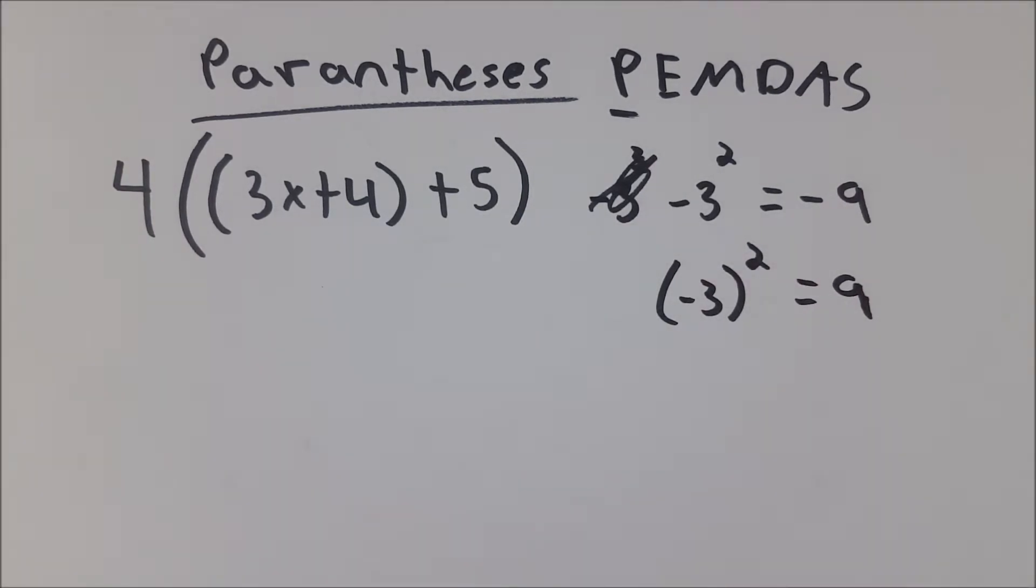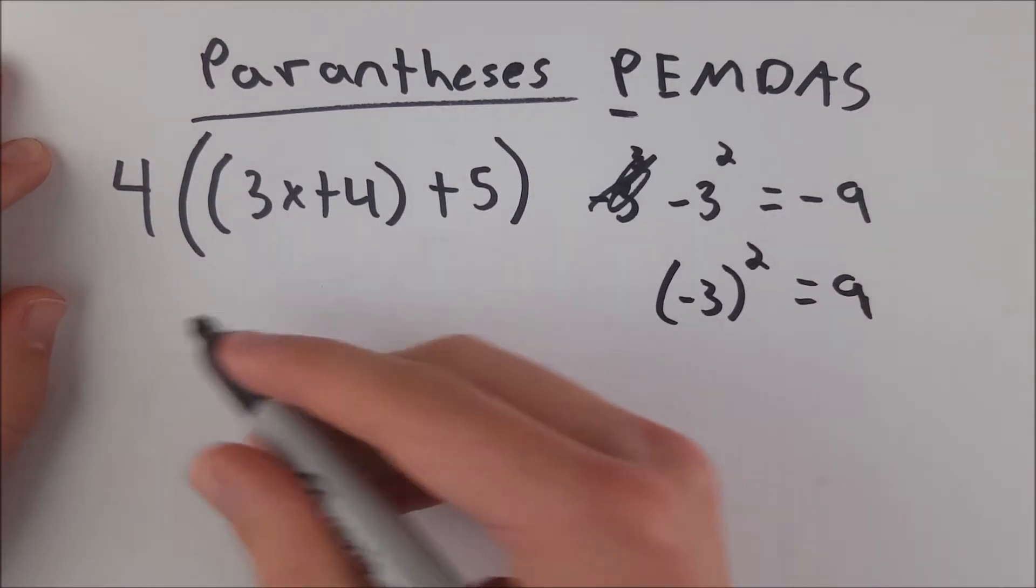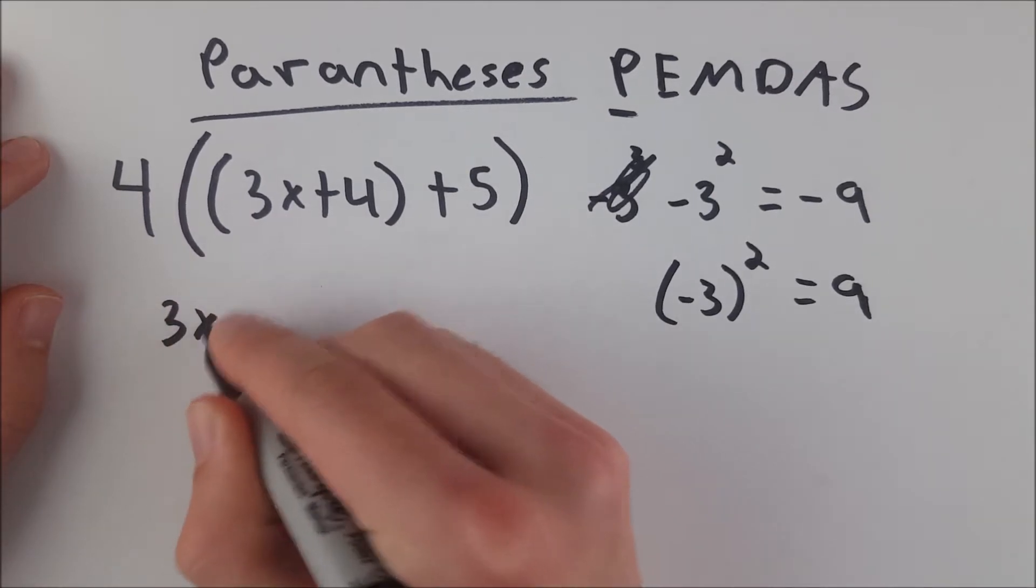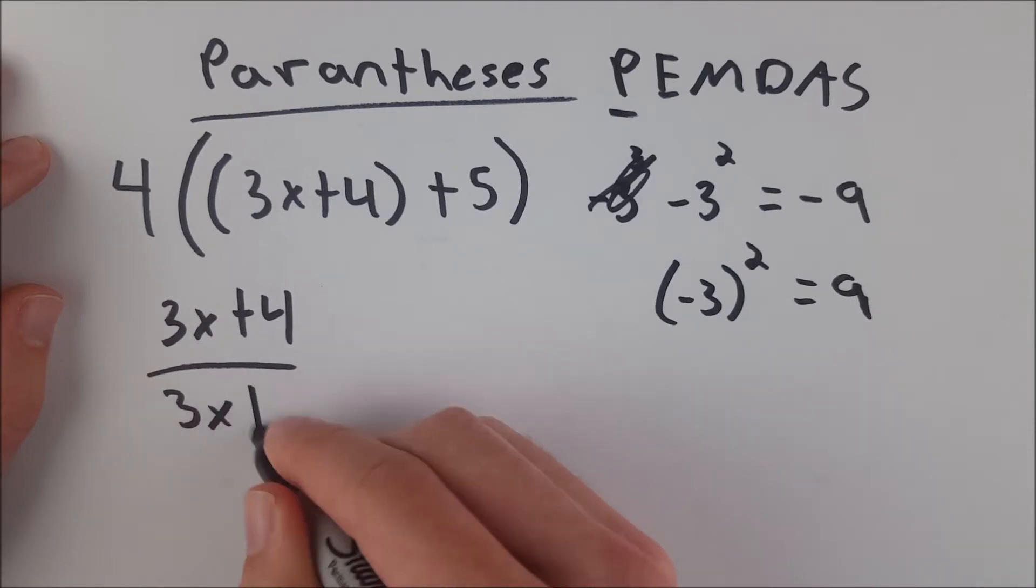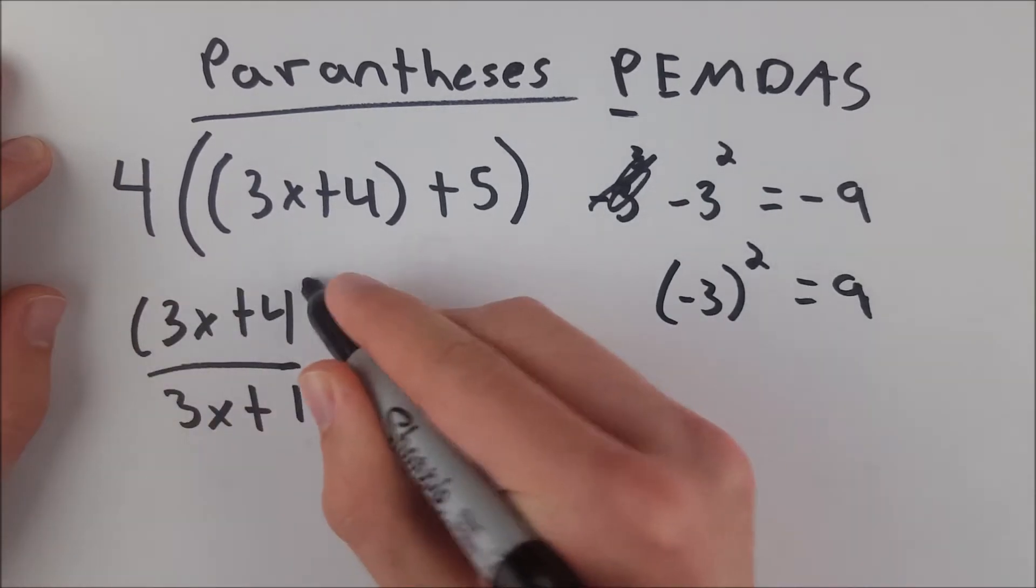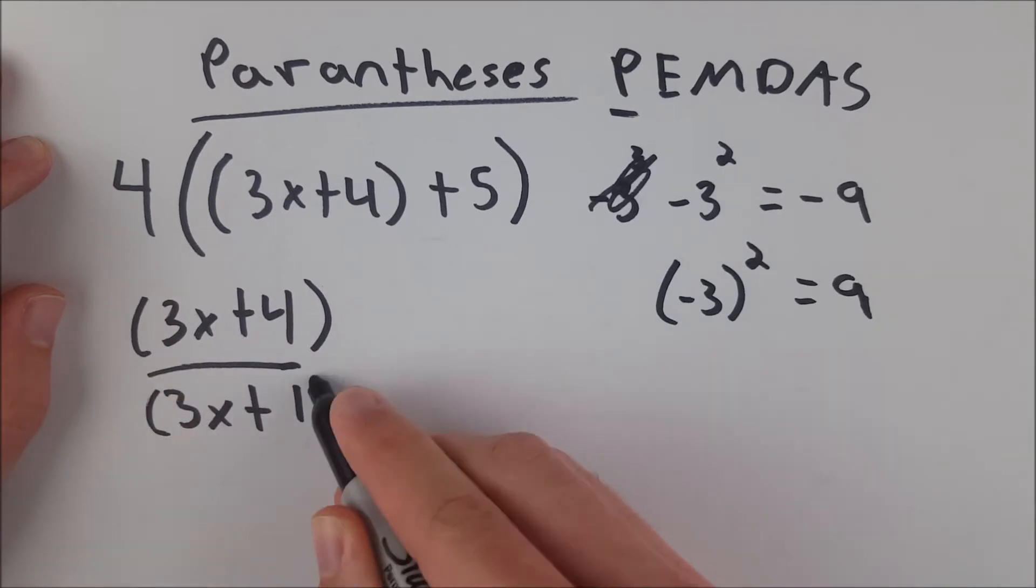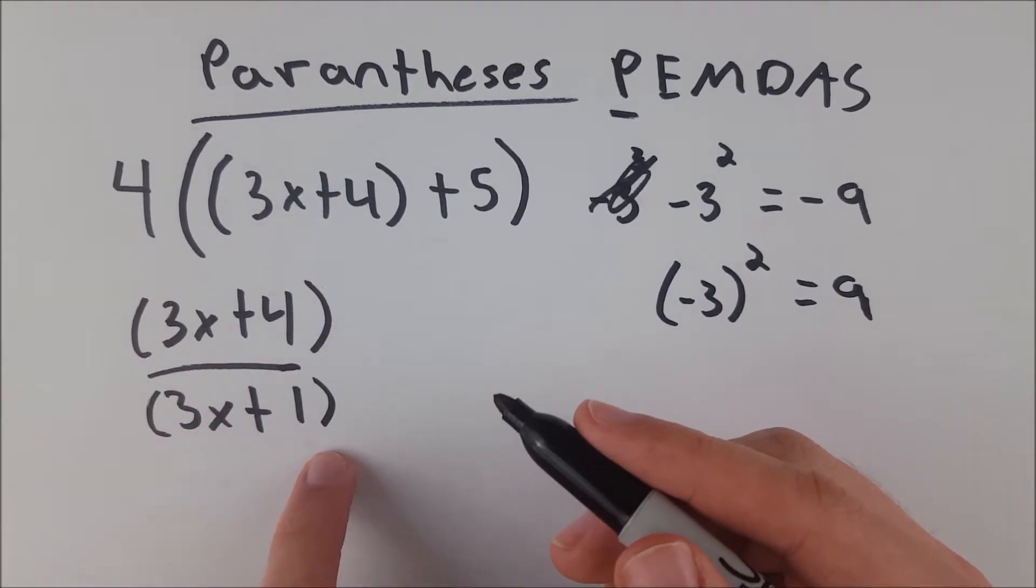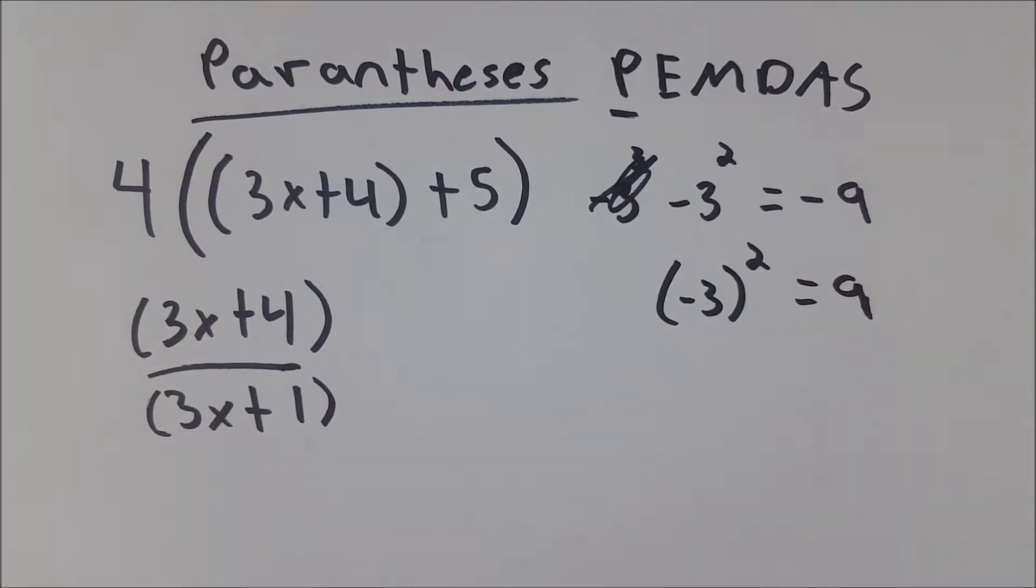Parentheses can also be very useful when you are trying to graph an equation into a scientific calculator to make sure that it's very clear what you want the calculator to do. They're very handy for if you have a numerator and a denominator of a fraction like 3x plus 4 divided by 3x plus 1. Then you have to put this in parentheses in a calculator. You need 3x plus 4, and then you would use a slash, and that would tell the calculator to divide this whole expression by this whole expression.